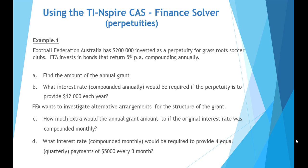Let's consider an example. Football Federation Australia has $200,000 invested as a perpetuity for grassroots soccer clubs. FFA invests in bonds that return 5% per annum compounding annually. We need to find the amount of the annual grant, and what interest rate compounded annually would be required if the perpetuity is to provide $12,000 each year. We'll also investigate what happens if the original interest rate was compounded monthly, and what rate compounded monthly would provide quarterly payments of $5,000 every three months.